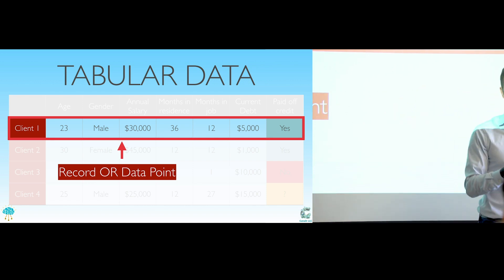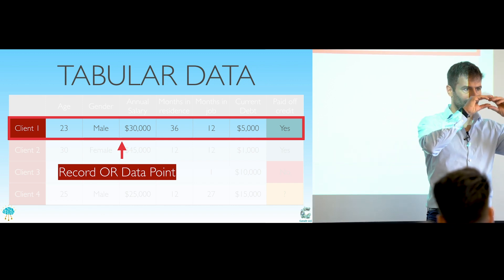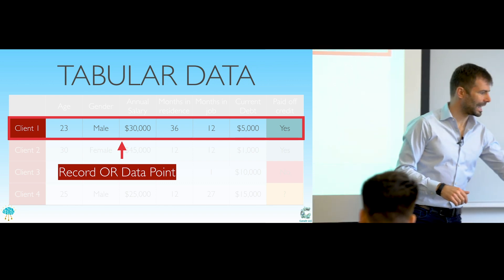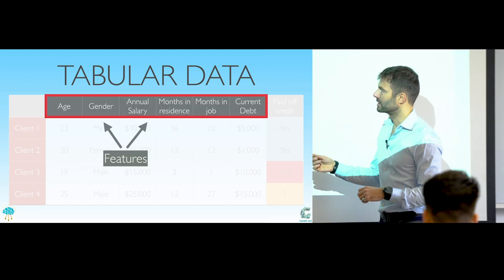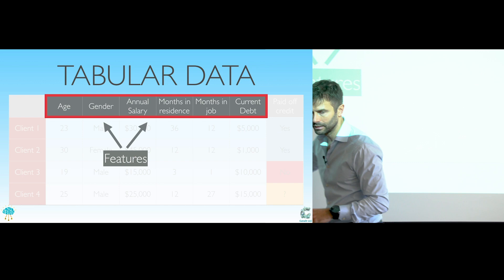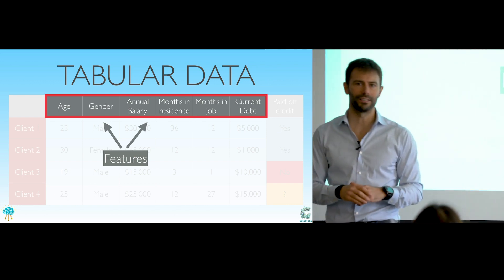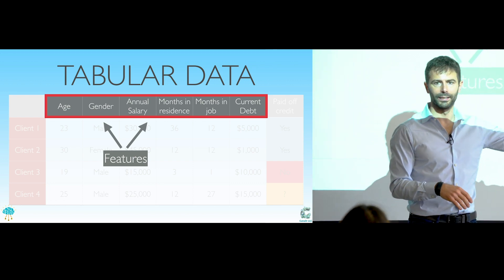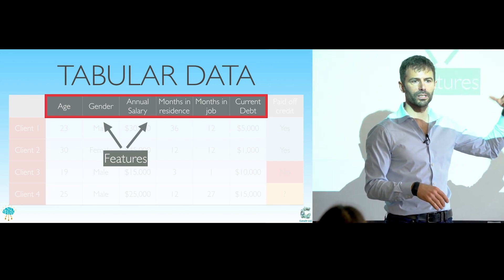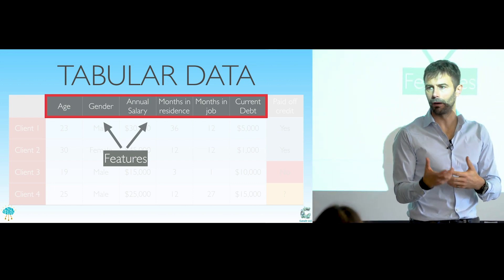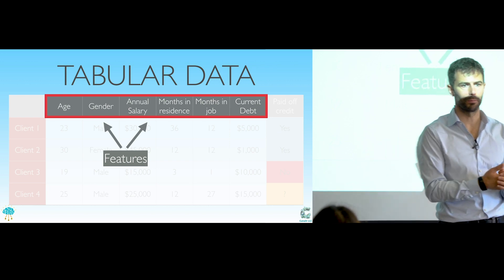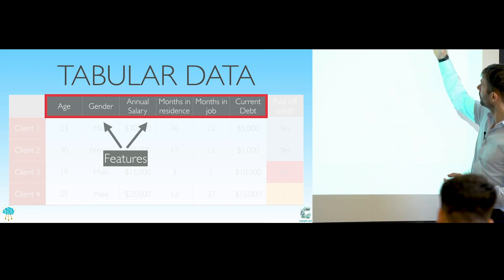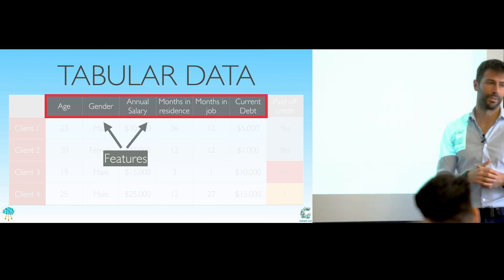So whenever I say data point, in your mind it's like, okay, it's talking about a row in Excel. And if I talk about features, which you'll hear a lot throughout these five days, features are the properties of my data point — the column names or the schema, what I know about the data point, the inputs to my model. And lastly, the label is what I'm predicting.